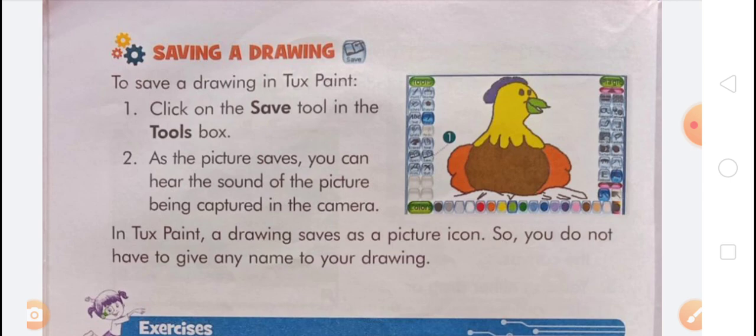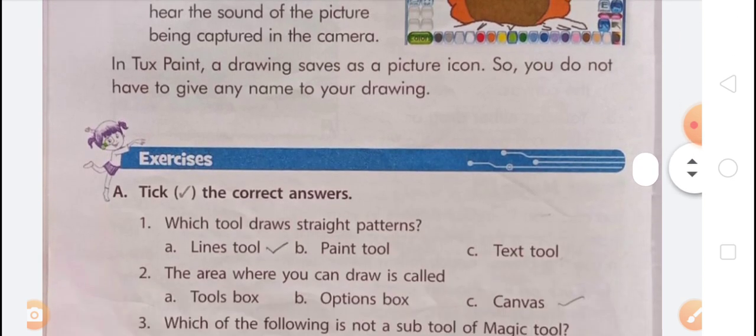Today's topic also includes saving a drawing. To save a drawing in Toxpaint, click on the Save tool in the tools box. As the picture saves, you can hear the sound of a picture being captured in a camera click. In Toxpaint, your drawing saves as a picture icon, so you do not have to give any name to your drawing.